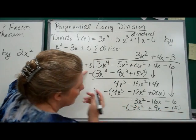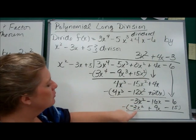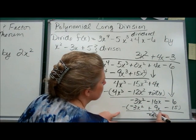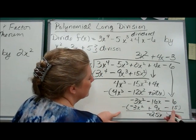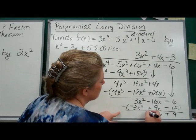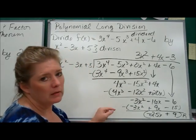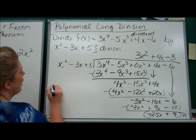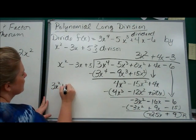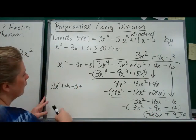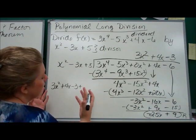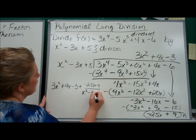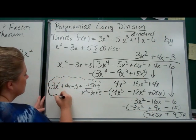And we're going to subtract. Minus and negative becomes plus, and those two cancel. Negative 16 minus 9 is negative 25x. Negative 6 minus negative 15 is positive 9. This is the remainder. The quotient — your final answer after you do the division — should always be written out as 3x squared plus 4x minus 3, plus the remainder over the divisor: plus negative 25x plus 9, over x squared minus 3x plus 5. So this is your final answer.